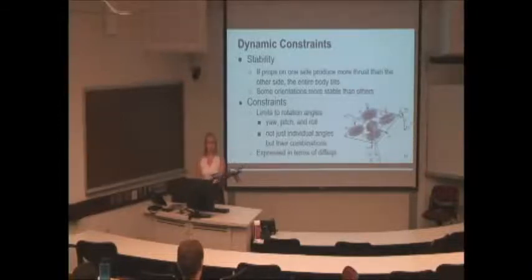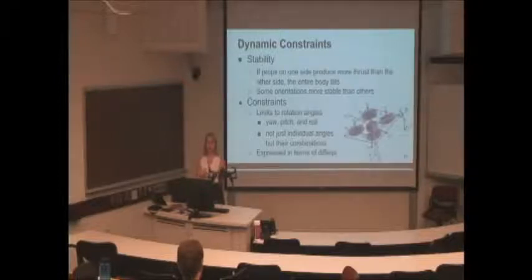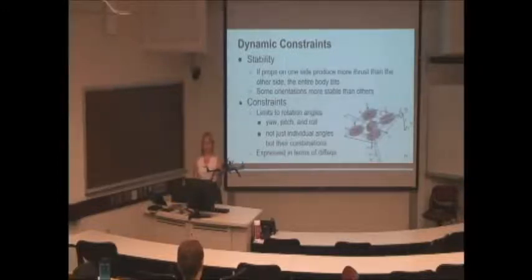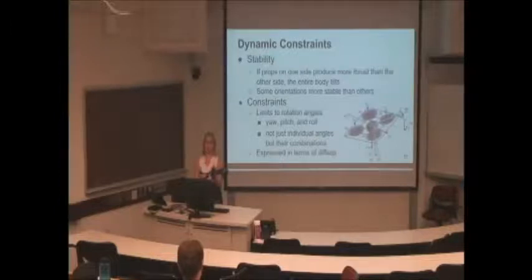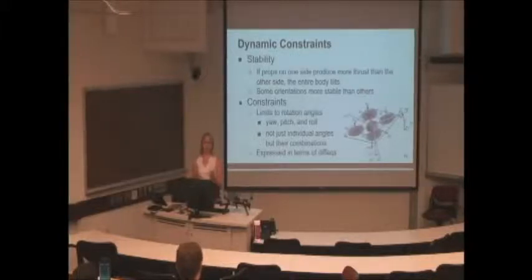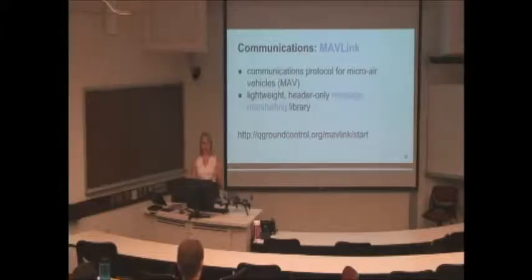Quadcopters produce their motion by varying the rotational speeds of the individual motors. Varying the speed or having a differential in speed creates a differential in the lift forces. By speeding up all of the rotors at the same time it goes up, and if you slow them all down at the same speed it goes down. If you have any differential in the lift forces, the entire body will tilt. We have to impose certain constraints on this to ensure that the configuration is stable, meaning it will stay in its intended position rather than crash to the ground. We need to limit these rotation angles and account for what is a stable configuration in each combination of these angles, which are expressed in terms of differential equations.